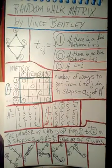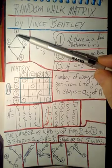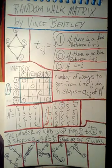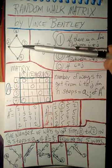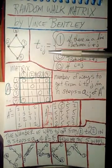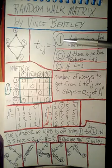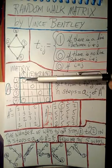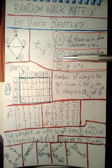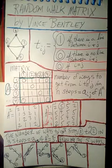Today we're going to learn something called a random walk matrix. We'll take a look at four cities — city 1, 2, 3, and 4 — and we'll connect some of the cities with a line. We're going to define the elements inside of a matrix according to these rules: we'll put a 1 inside the matrix element if there is a line between one of the cities and the other one, and a 0 if there is no line between the cities.